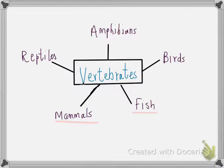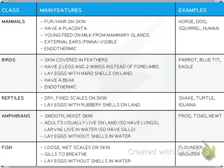There are five types of vertebrates: amphibians, birds, fish, mammals, and reptiles. We'll look at the features of each using a table to make learning easier.